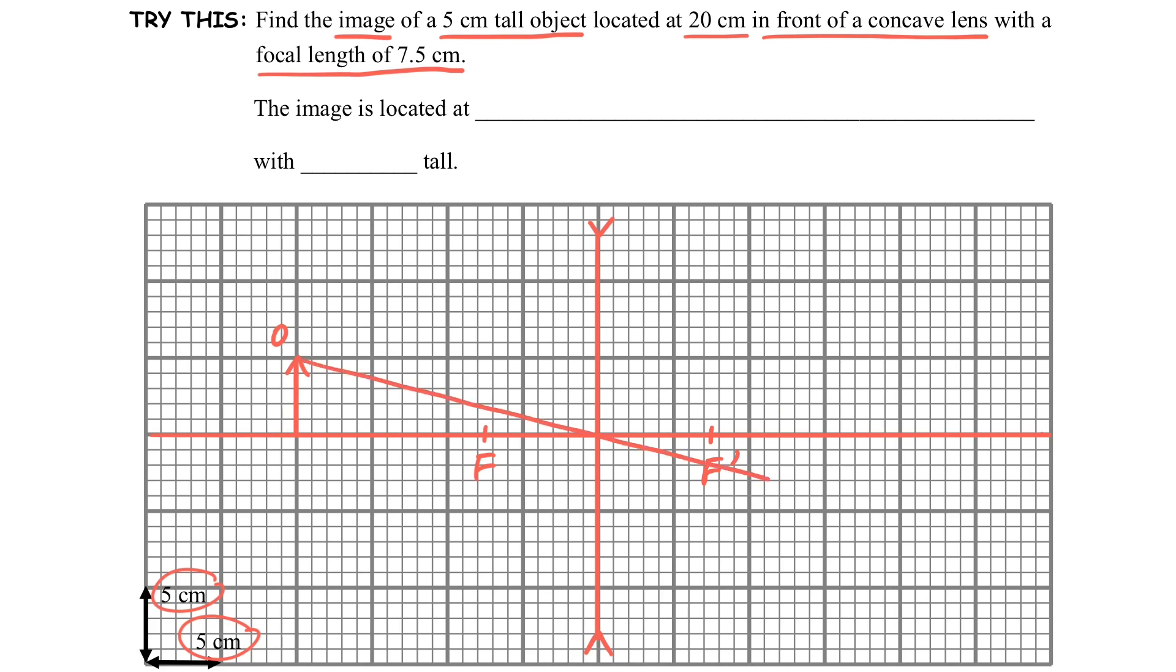Okay, so we have finished the setup and we can draw the light ray. So you can see that we use the rule number three. The light pass through the center, we will go through directly.